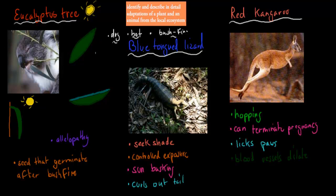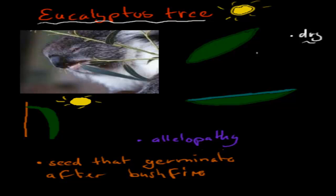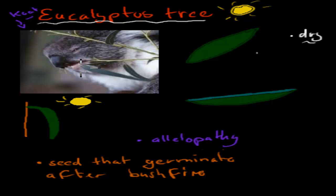What kind of adaptations do these organisms — organisms are just any living thing — have to be able to survive in those conditions? We've got our eucalyptus tree, and here we've got a koala eating that eucalyptus tree, munching on the leaf. You can see the leaves are quite thin. How does that help them survive in a hot and dry environment?